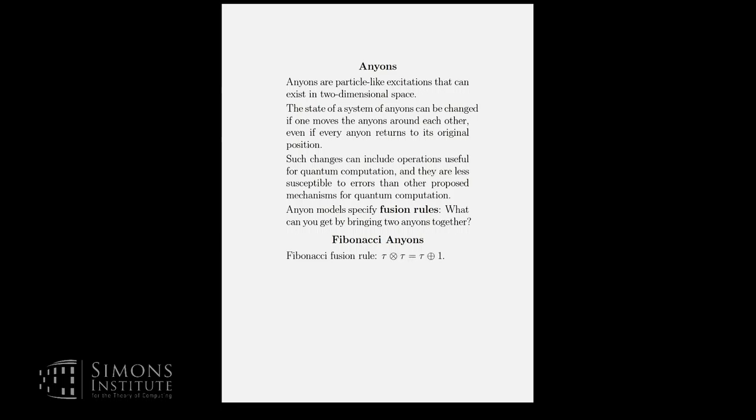So what are Fibonacci anyons? Fibonacci anyons, tau is the symbol for Fibonacci anyon. At least it is in this talk. It is in some other places too. The fusion rule, this is to be read as if you take a Fibonacci anyon and another Fibonacci anyon and fuse them together, the result will be a Fibonacci anyon or vacuum. One is the vacuum, the identity for multiplication. So the multiplication operation here is bring them together.